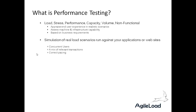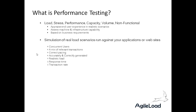Running at a correct pacing — that's the speed at which each user is running — and accurately and correctly generated load conforming to HTTP standards. If you follow all four of those points, you end up with realistic load, which will then give you a fingerprint of the response time the application will deliver. It will give you the response time you can expect, the transaction rate the application can deal with at its peak, and the maximum supported number of concurrent users in a stress test.